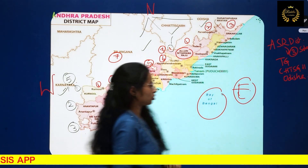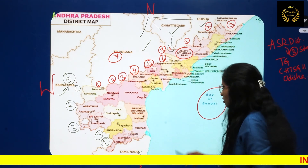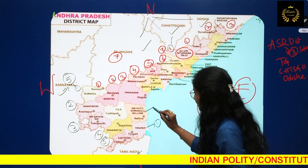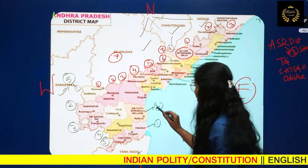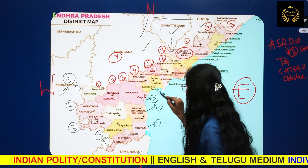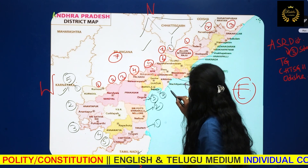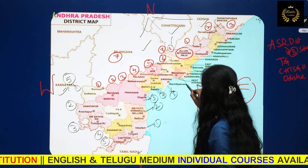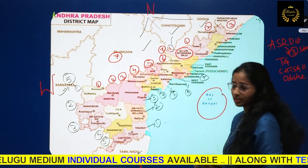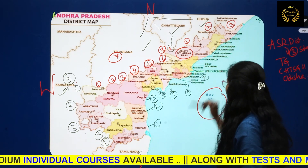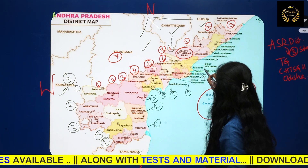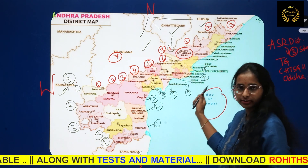Next, let's check the coastal region districts. First is Tirupati, second is Nelluru (Shri Potti Sriramulu Nellore), third is Prakasham, fourth is Bapatla, fifth is Krishna, sixth is Bhimavaram (West Godavari), seventh is Konasima, and eighth is Kakinada.